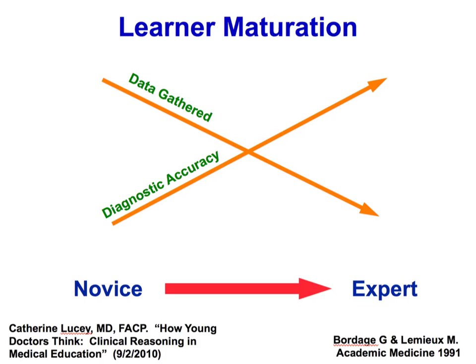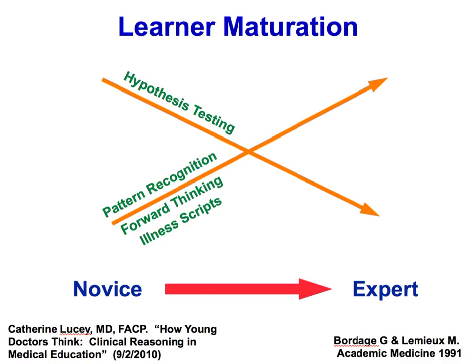Going from novice to expert means using more forward thinking, pattern recognition, and illness scripts, and less hypothesis testing — because hypothesis testing is inefficient and slow, while the others are fast and clear. The problem, as Groopman discusses, is when something doesn't totally fit the pattern, we say it's just a variant and overlook things that aren't fitting right, going down the wrong path. Students need to see this — if you could point out the illness script, the pattern, that's exactly what we're starting to do in medicine now.